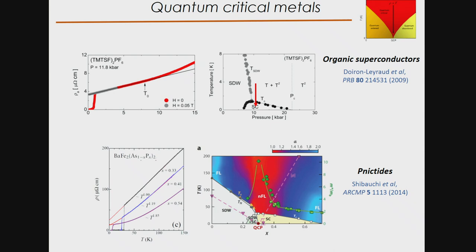Here I show an example of an organic superconductor TMTTF₂PF₆. The tuning parameter here is pressure. At zero pressure this compound is in a spin density wave state, and when you apply pressure the SDW transition temperature decreases. Right at the point where the spin density wave disappears, you see the emergence of superconductivity, and when you apply magnetic field to destroy superconductivity, you see a beautiful linear term down to very low temperature.